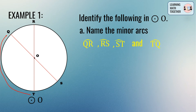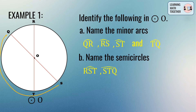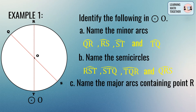The minor arcs in circle O are: arc QR, arc RS, arc ST, and arc TQ — four minor arcs in total, since these are the arcs measuring less than 180 degrees. Now let's name the semicircles: semicircle RST, semicircle STQ, semicircle TQR, and semicircle QRS.